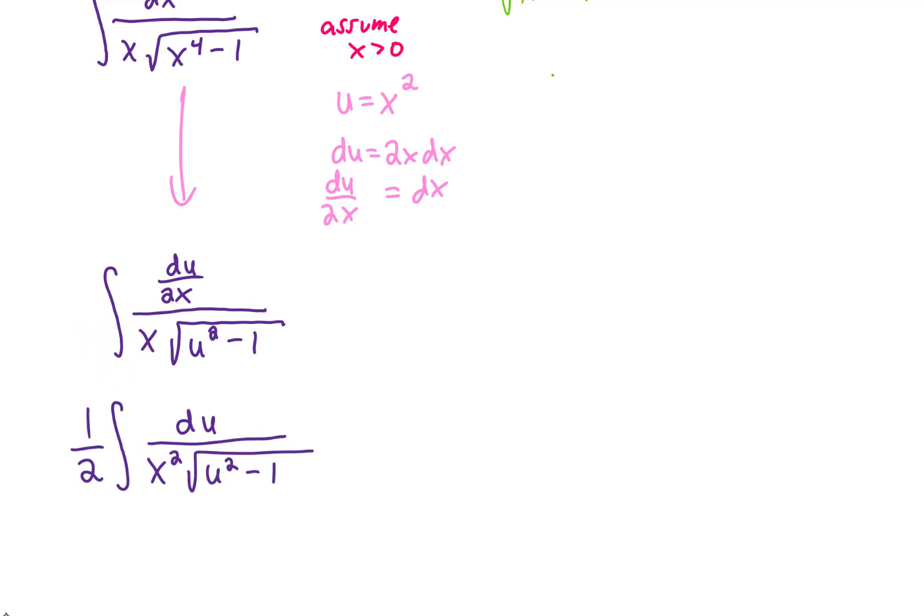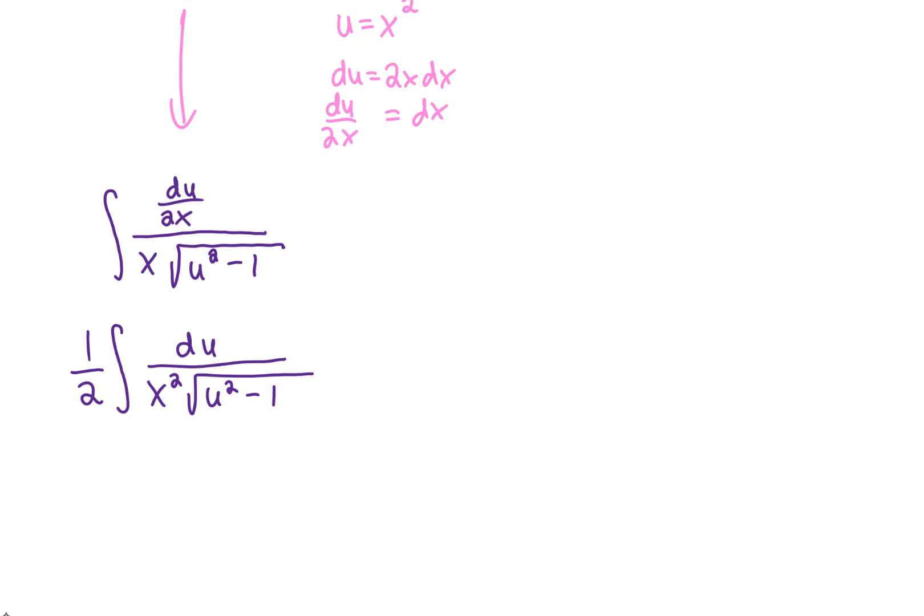Now I'm still uncomfortable because we still have u's and x's in the same integral, but notice now that this x squared in the denominator can be rewritten as a u. That gives us an integral with all u's in it, and I'm starting to feel a little bit better about this.